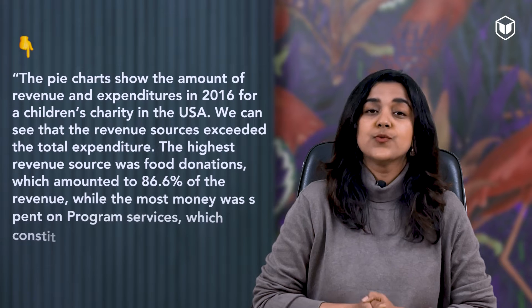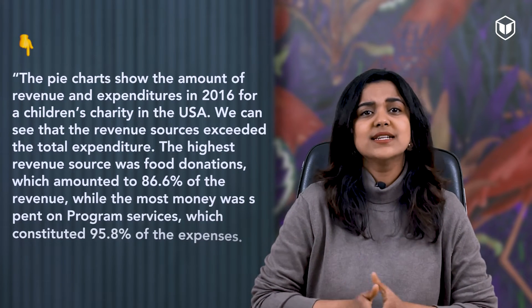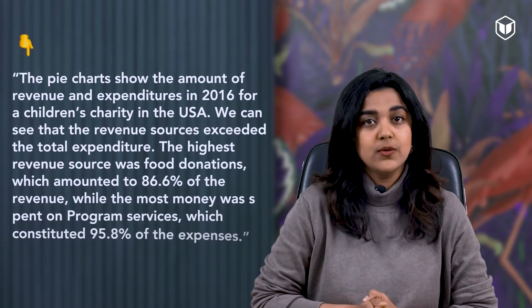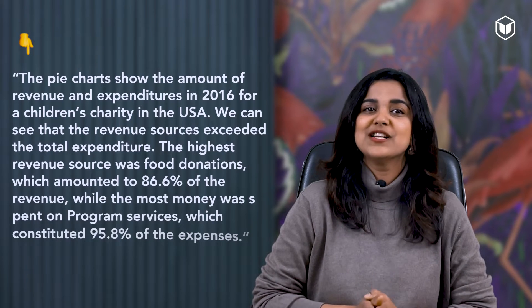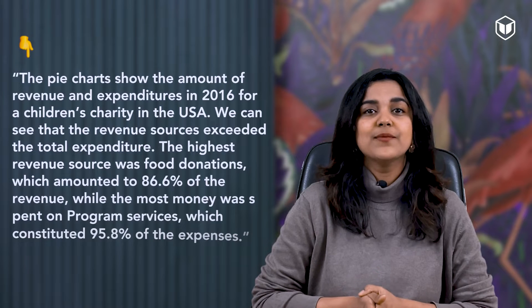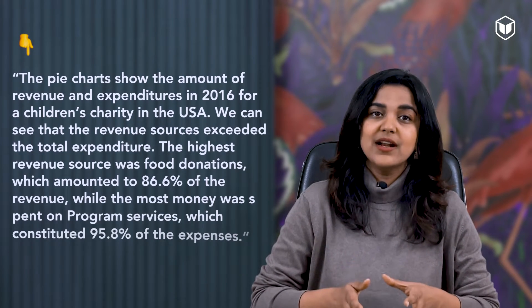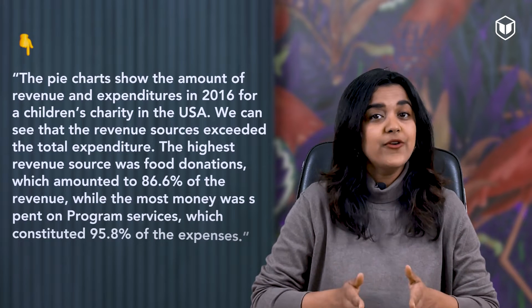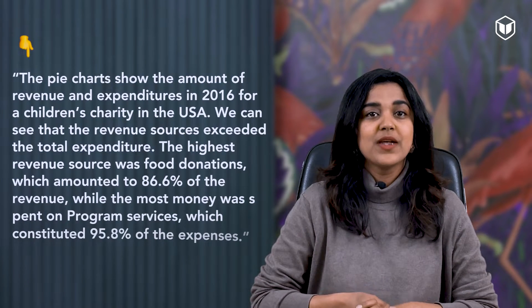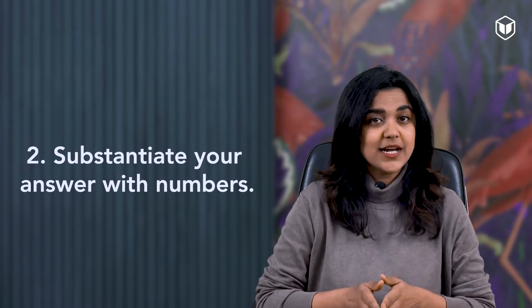Instead I should say something like: 'The pie charts show the amount of revenue and expenditures in 2016 for a children's charity in the U.S. We can see that the revenue sources exceeded the total expenditure. The highest revenue source was food donations which amounted to 86.6% of the revenue, while the most money was spent on program services which constituted 95.8% of the expenses.' Here we analyzed the data to show how revenue is more than expenditure, and then reported the numbers.